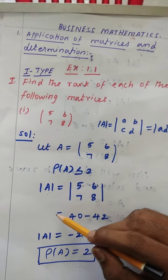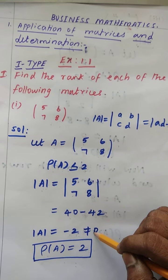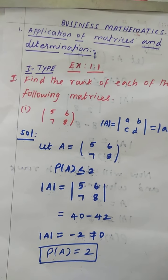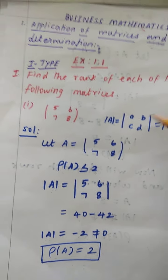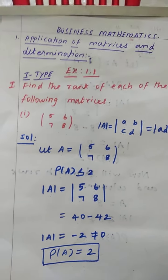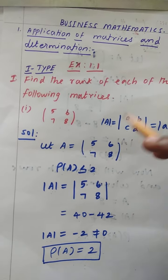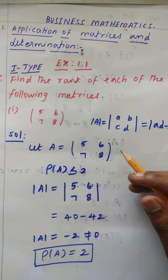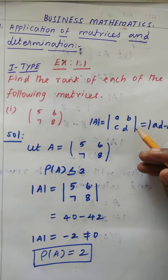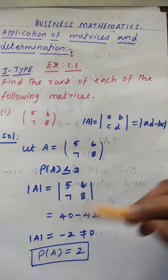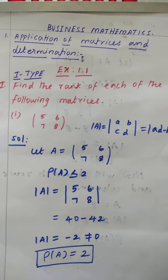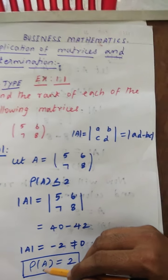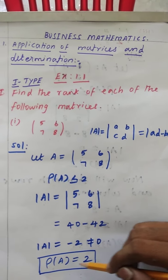Sometimes the determinant A equals 0, which means the rank is not 2. So now we go to the next step. Since this is a 2×2 matrix, we decrease to a 1×1 matrix — row 1, column 1 — and then find the rank. But in this case, determinant A is not equal to 0, so rank of A equals 2.